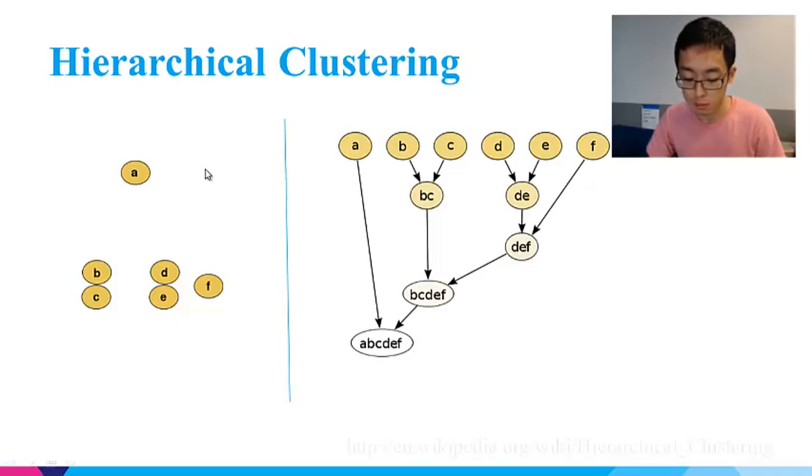Here is the process. First, we calculate the distance between every two points and find that DE has the shortest distance. We cluster DE together and treat DE as one single data point. Now we have five points: Point A, point B, point C, point DE, and point F.